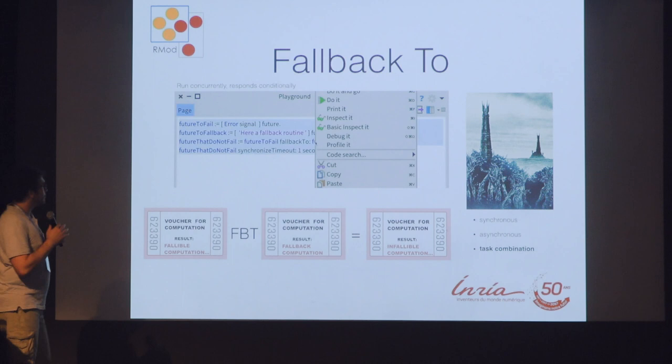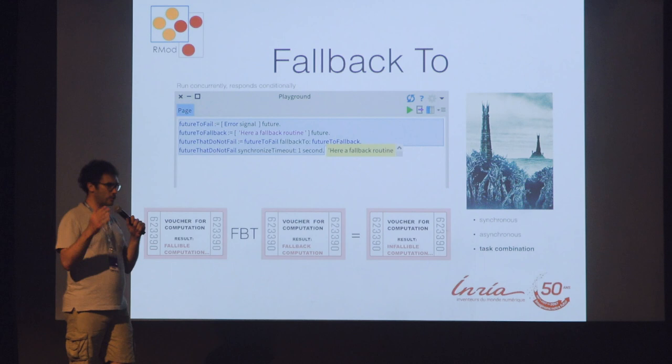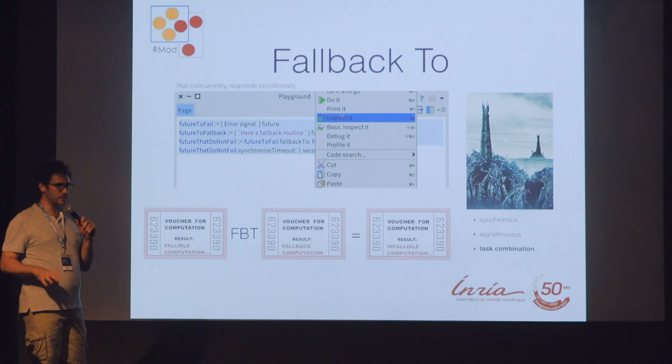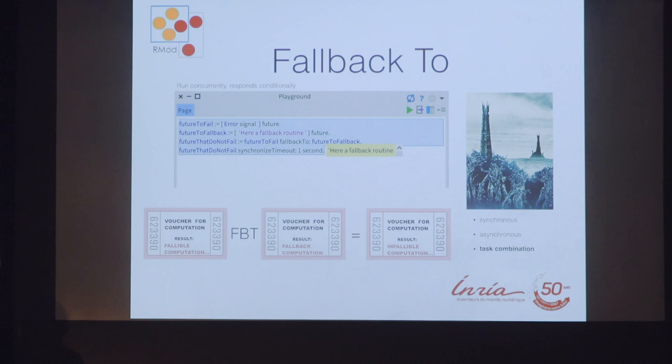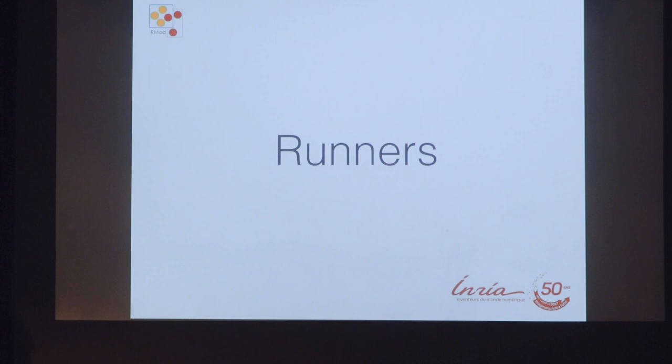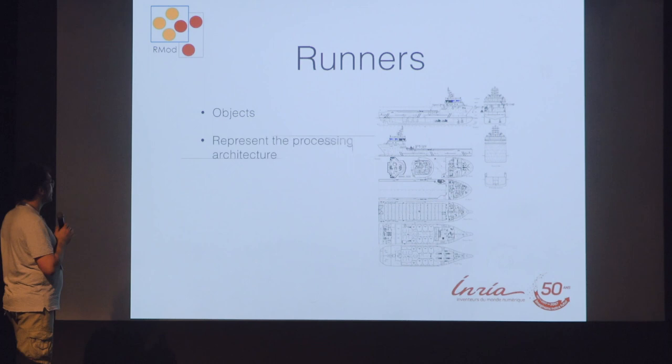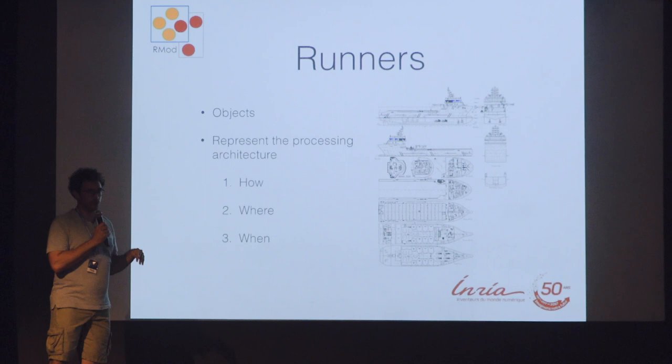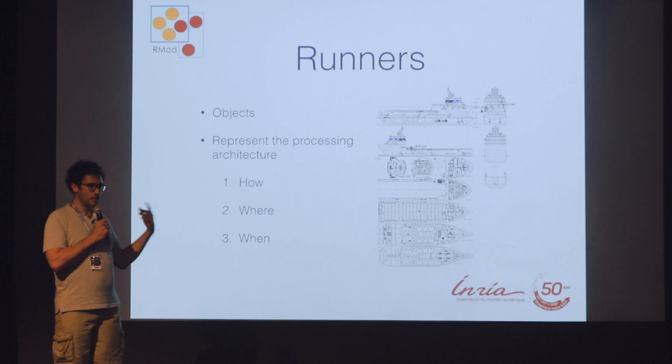So far we have been looking at the task side, the future side, how to put one task after the other, and how to selectively organize them. Now we are going to the side of the process — how these tasks are finally scheduled and able to run. For doing so we have what we call runners. Runners are also objects, they're polymorphic, they represent the process architecture, and are in charge of answering questions like: how to process a task, when to process it, where to process it.